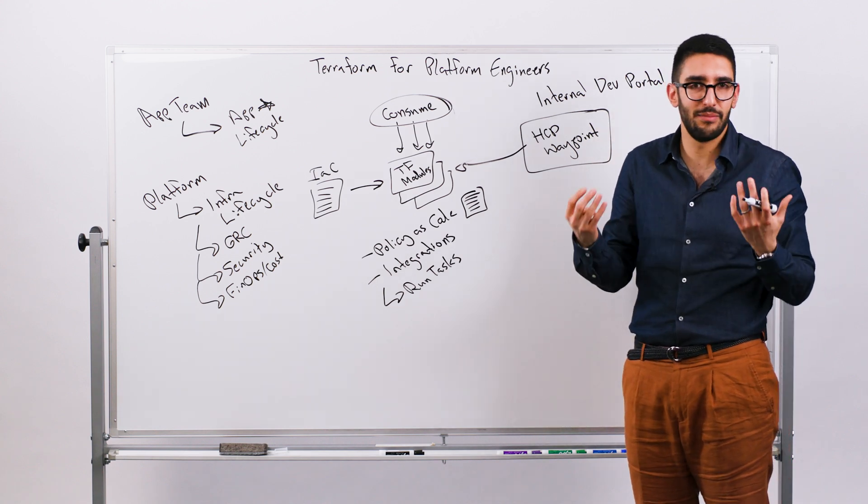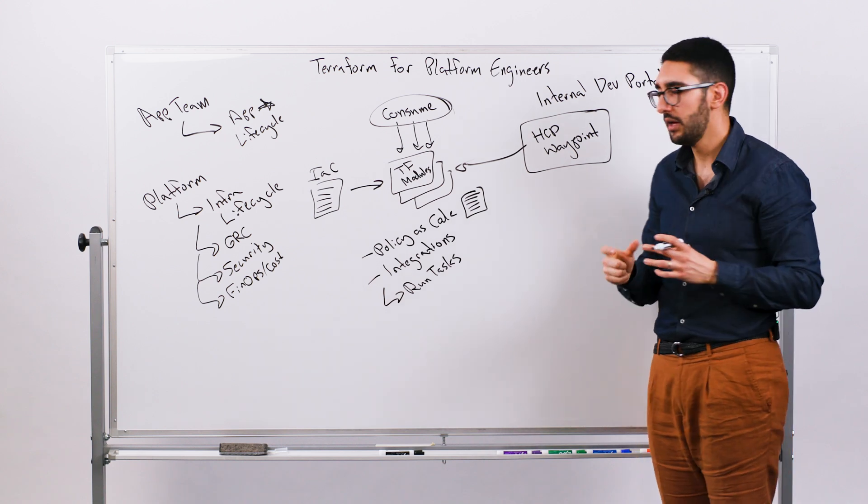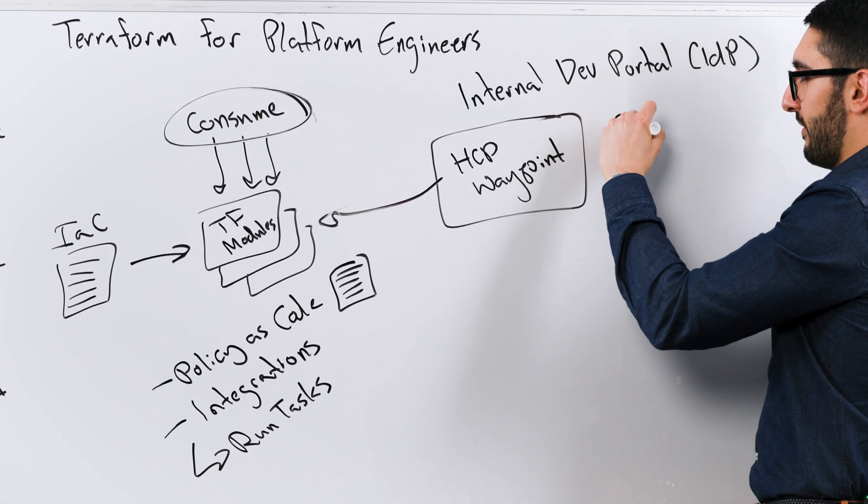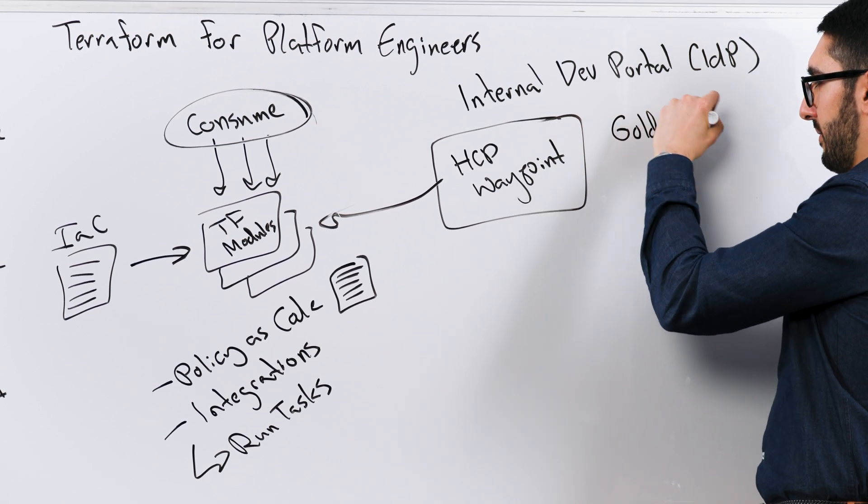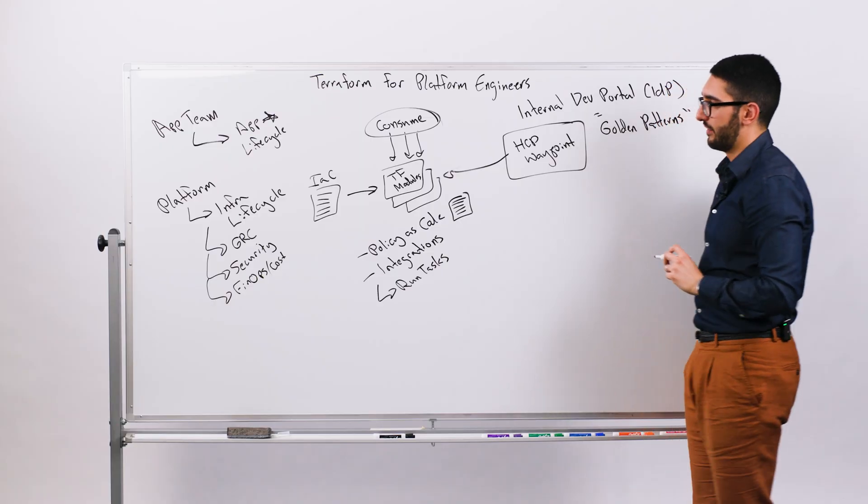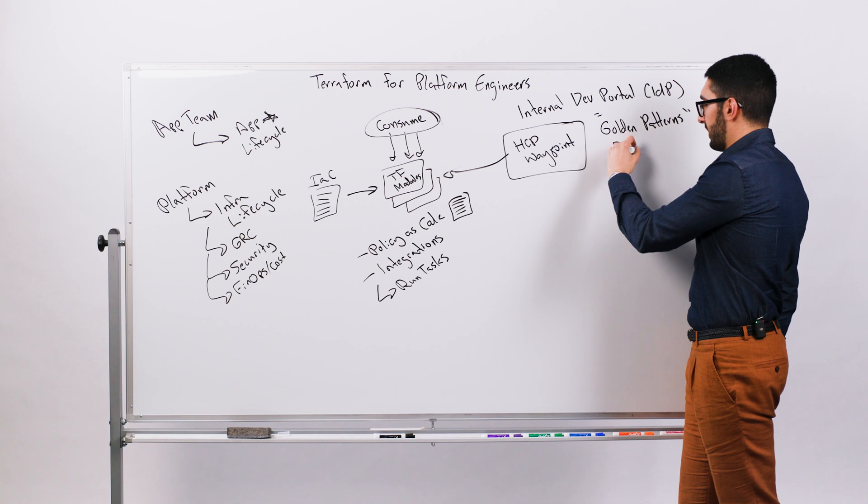But then what we're exposing to the developers and the app teams is sort of a higher level abstraction. They're just coming and say, give me a Java app with this set of add-ons associated with it. I don't really have to care how it works. Ultimately, over time, what that then enables is what we refer to as a set of golden patterns. These golden patterns are obviously defined through a set of modules. And that solves, I'll call it the day one provisioning problem.